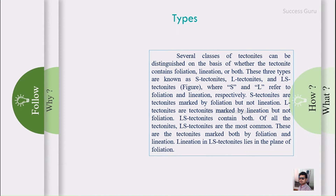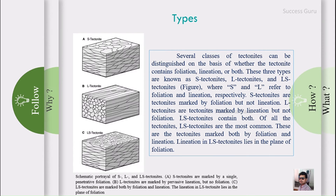To repeat: a rock with mineral lineation is called an L-tectonite; a rock with foliation is called an S-tectonite. Most rocks actually contain both foliation and lineation and are called LS-tectonites. Now let's look at the figures. This is an S-tectonite — a foliation tectonite — where the rock contains a planar structure.